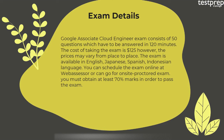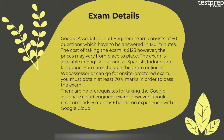Exam details: The Google Associate Cloud Engineer exam consists of 50 questions which have to be answered in 120 minutes. The cost of taking the exam is $125, however prices may vary from place to place. The exam is available in English, Japanese, Spanish, and Indonesian. You can schedule the exam online at Web Assessor or go for an on-site proctored exam. You must obtain at least 70% marks to pass the exam.